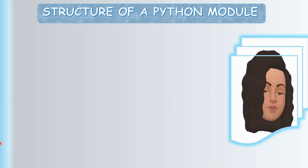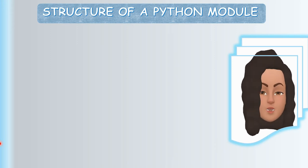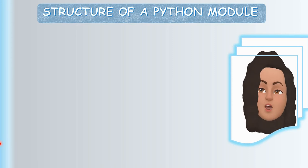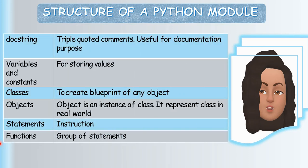Let's see the structure of a Python module. A Python module is used for re-usage without any rework — the code does not need to be rewritten. A Python module can contain: doc strings, variables, constants, classes, objects, statements, and functions. Doc strings are triple-quoted comments used for documentation purposes. Variables and constants are labels for data; classes are templates to create objects; objects are instances of classes representing real or abstract entities; statements are instructions; and functions are groups of statements.